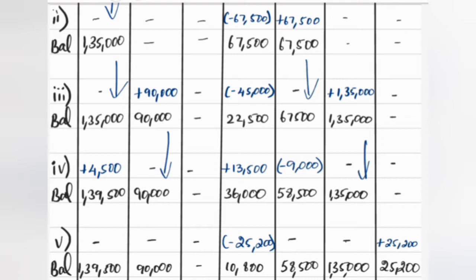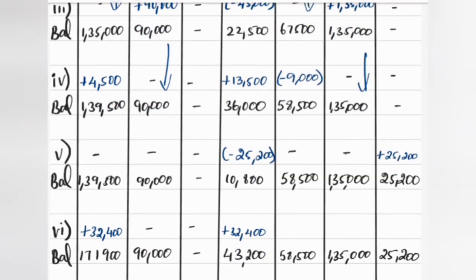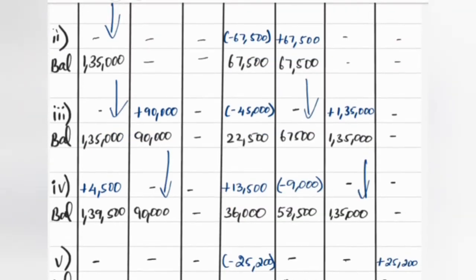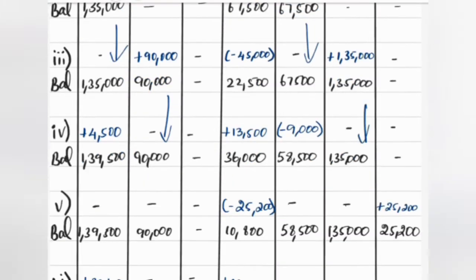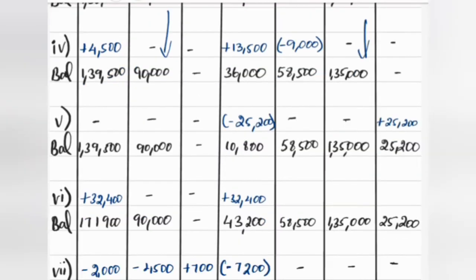Next: if you see ₹25,200, there is minus in cash and plus in machinery. So cash goes minus ₹25,200 and machinery is plus ₹25,200. This is the game — we are going to balance, carry forward and carry down.